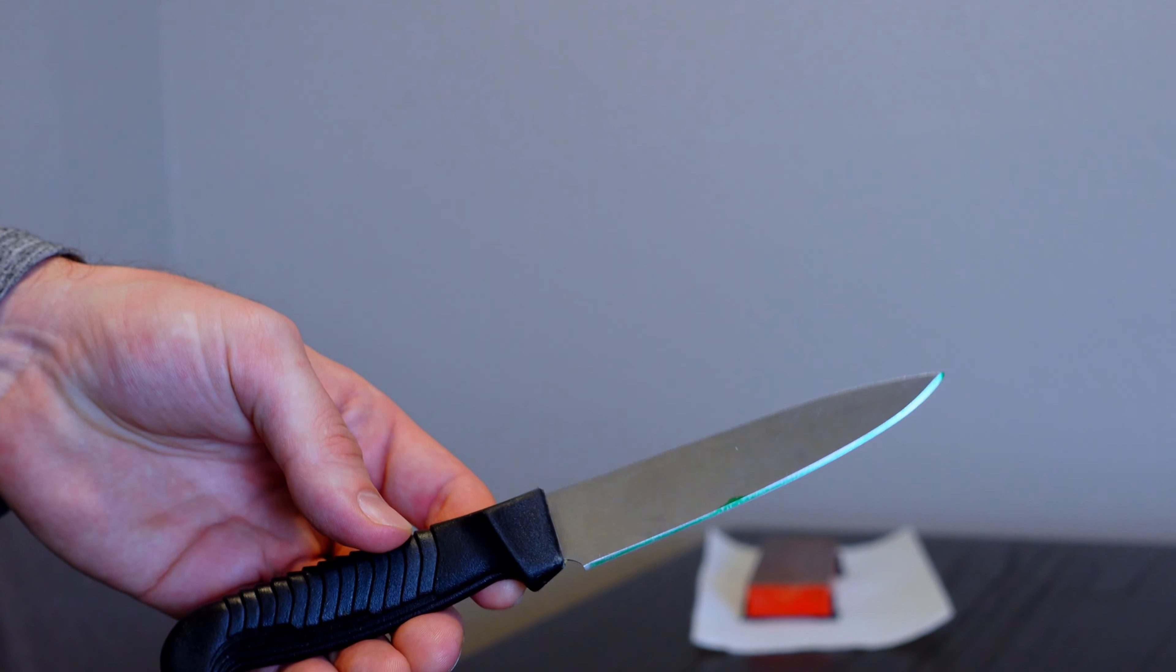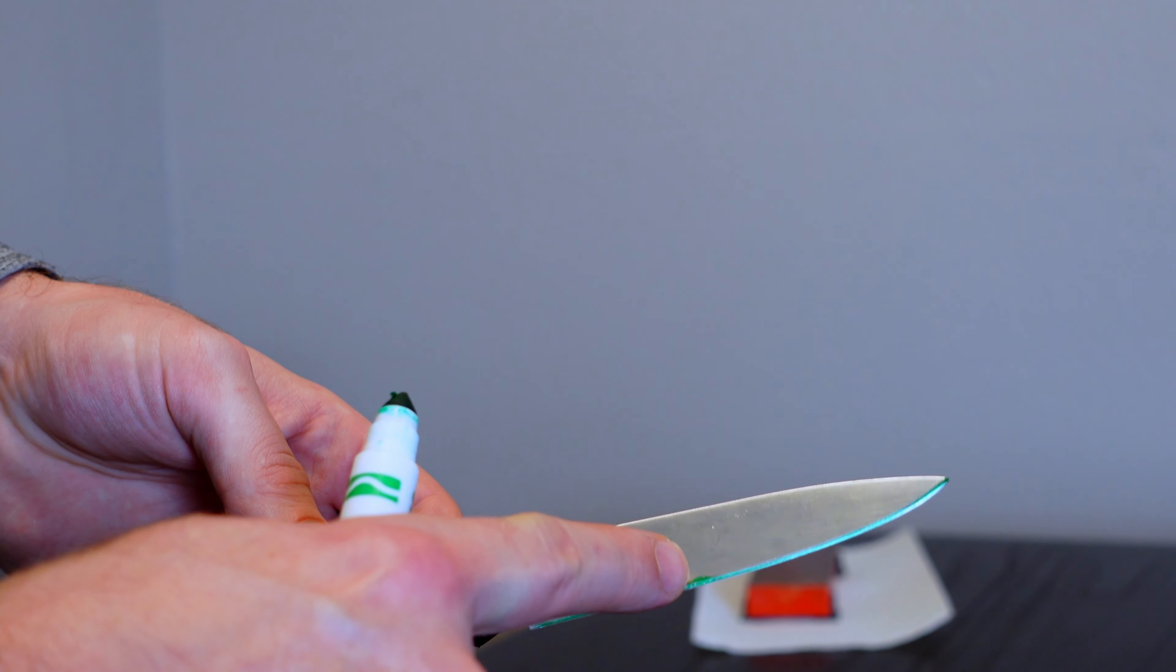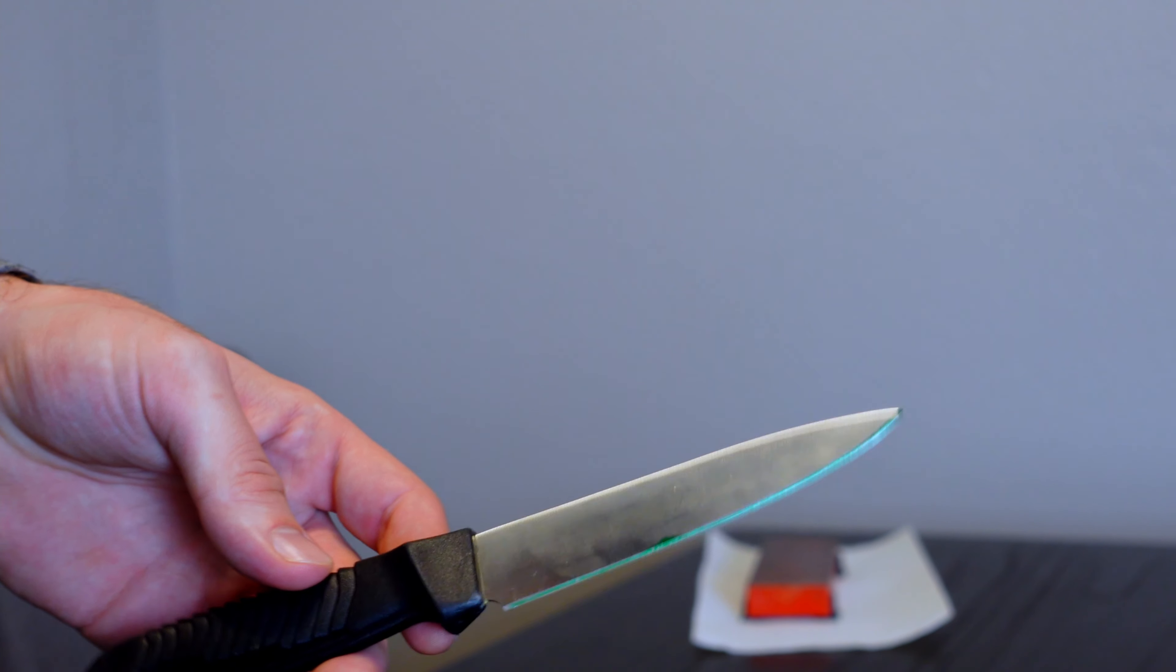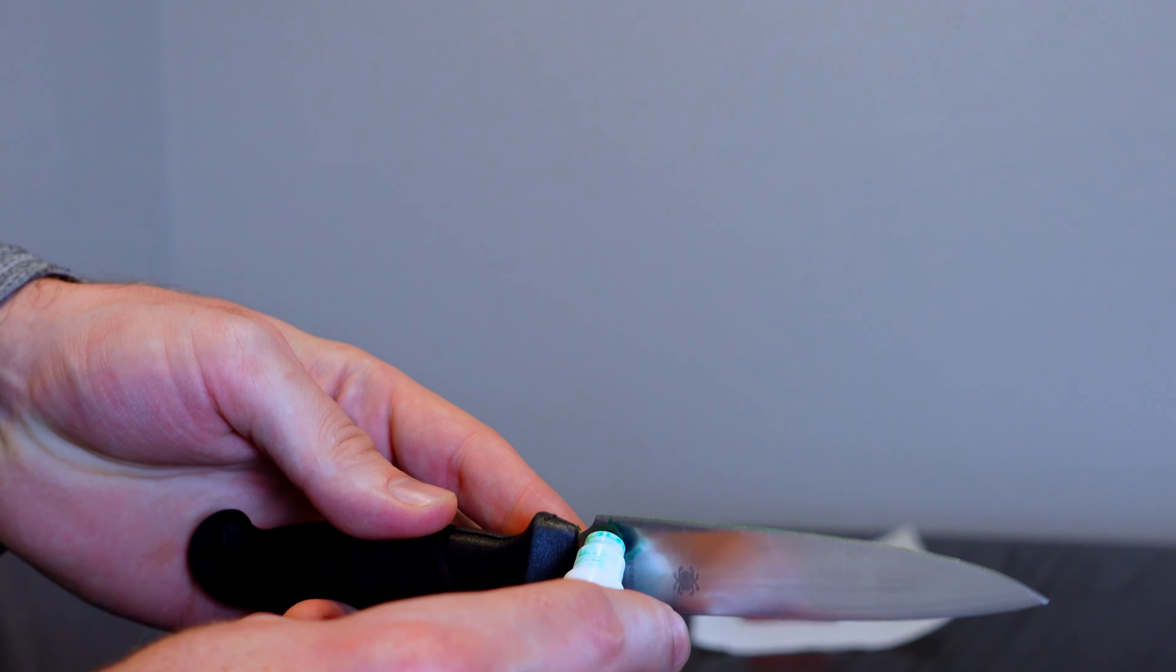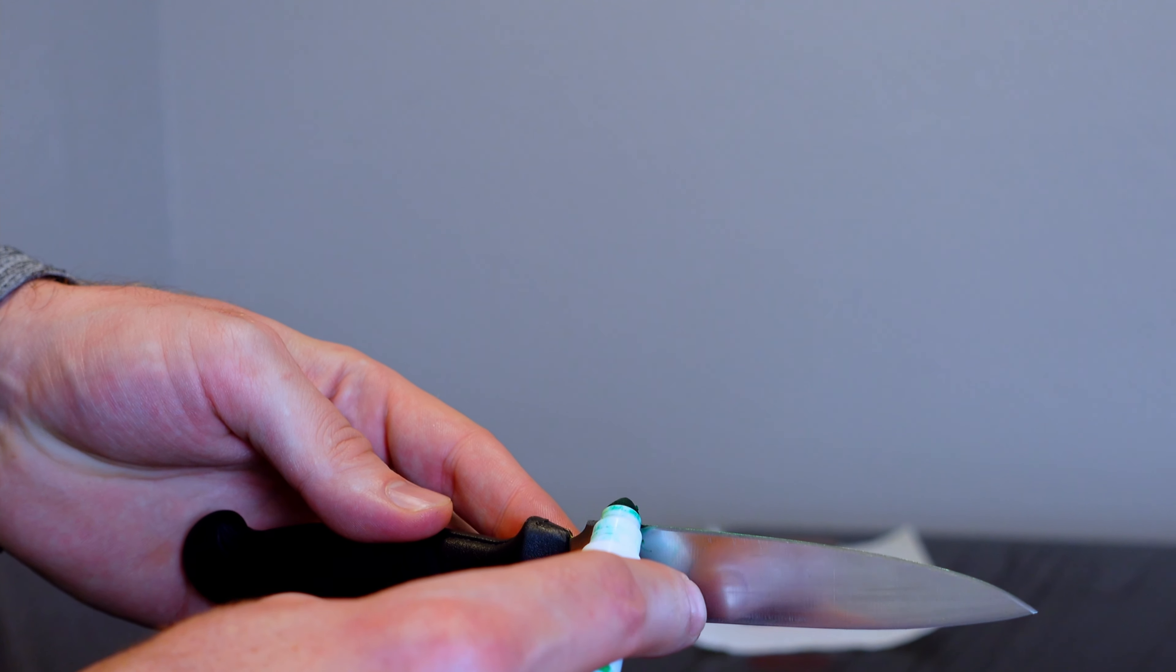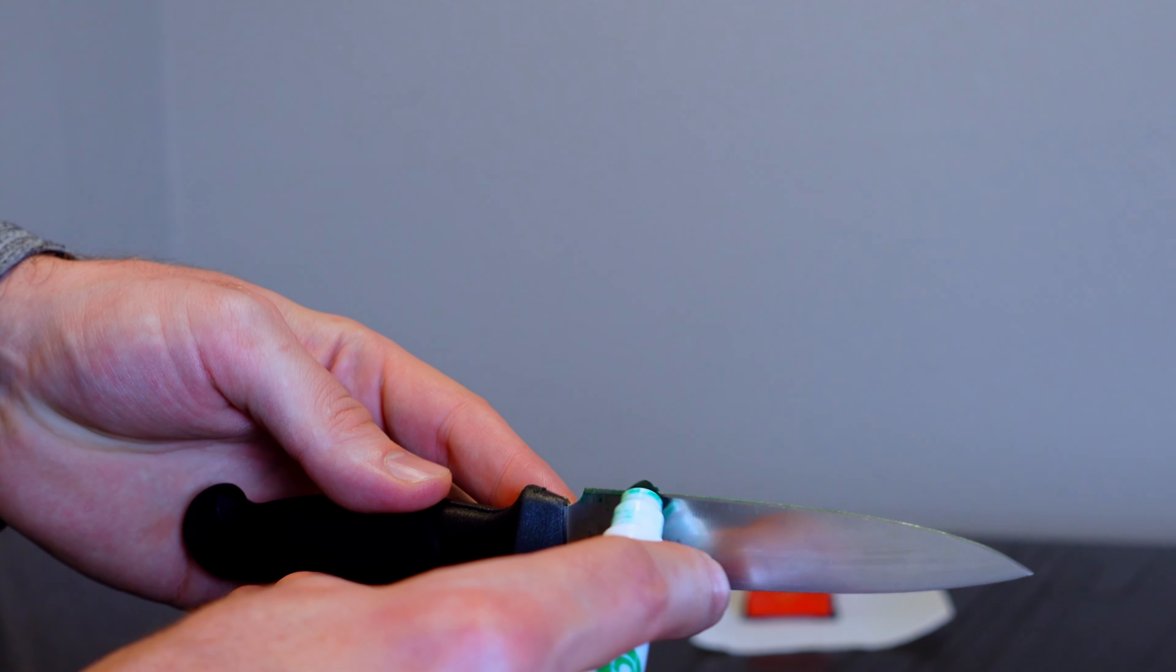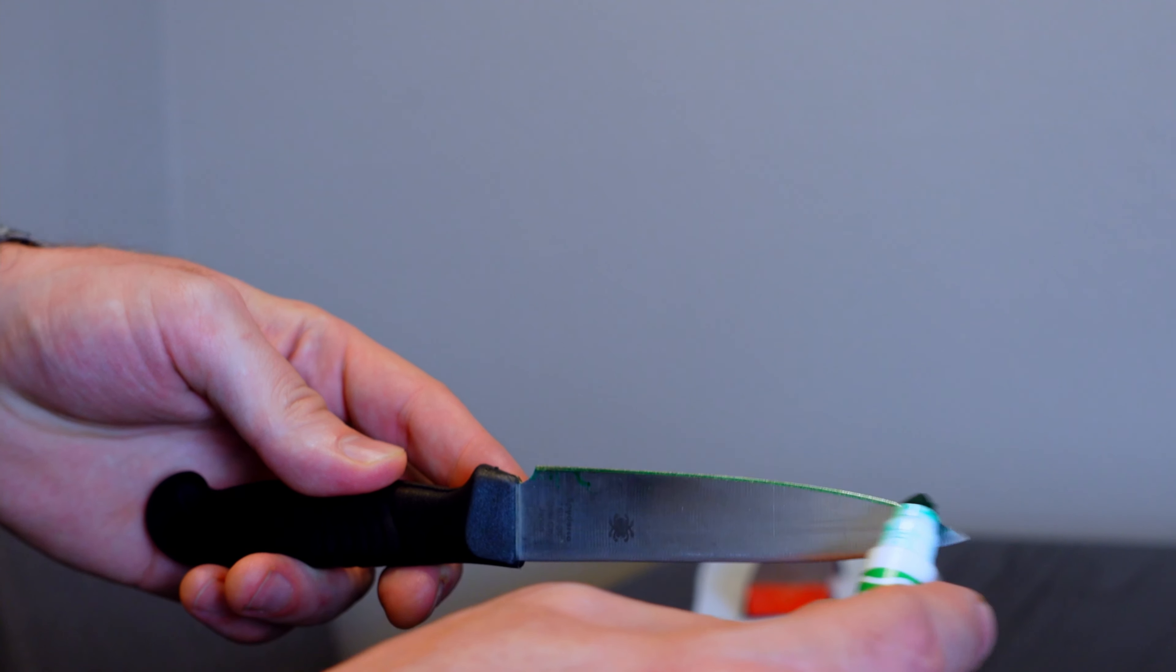Now let's say you are using a sharpie and you've marked up the knife where you don't want to. Don't worry because you can just use nail polish remover and it will take that off of the knife for you. In my case I can just wash this right off, being this is not a sharpie.